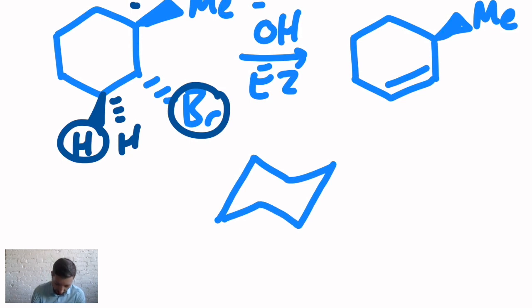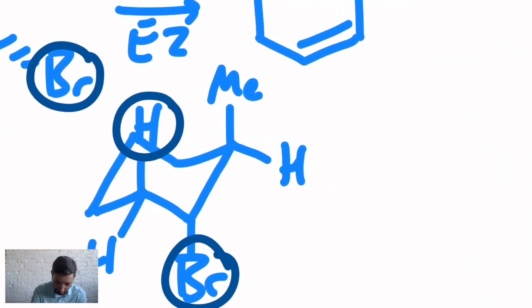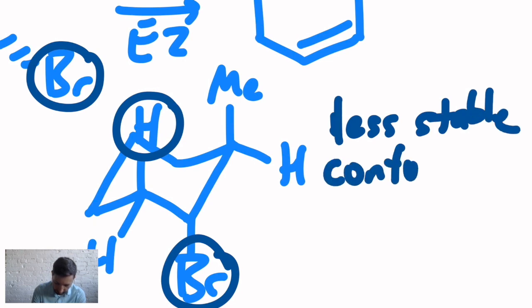And if I draw the conformation that's necessary for this, in order for the H and the leaving group, in this case the bromine, to be anti, you actually have to go via the less stable chair conformer, because that's the only way that gives you the anti-relationship. So less stable conformer needed in this case.